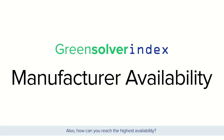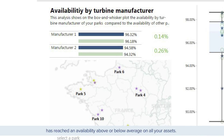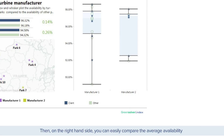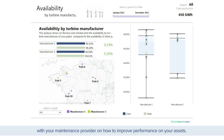How can you reach the highest availability? On the left side of this screen, you can see if the turbine manufacturer has reached an availability above or below average on all your assets. You can also choose the asset you want to evaluate. Then, on the right-hand side, you can easily compare the average availability of each of your parks to the average availability of the benchmark for the same turbine manufacturer. This comparison enables you to have constructive discussions with your maintenance provider on how to improve performance on your assets.